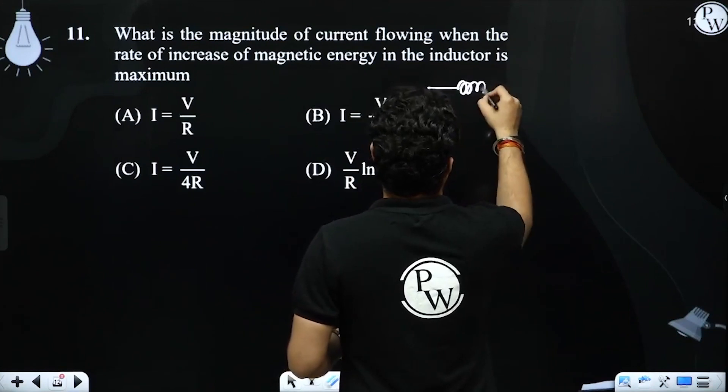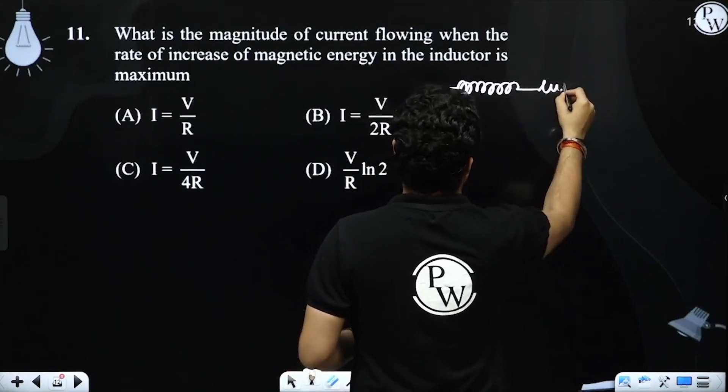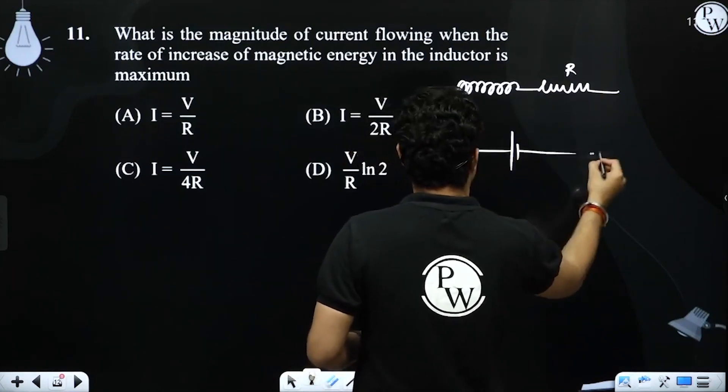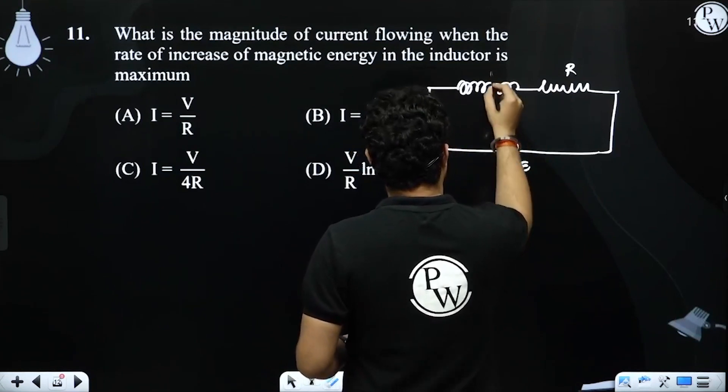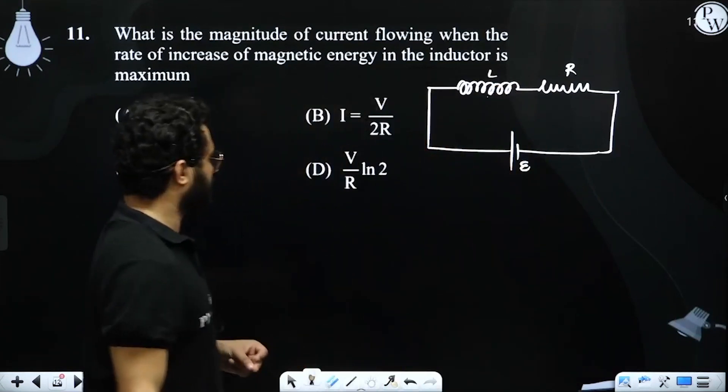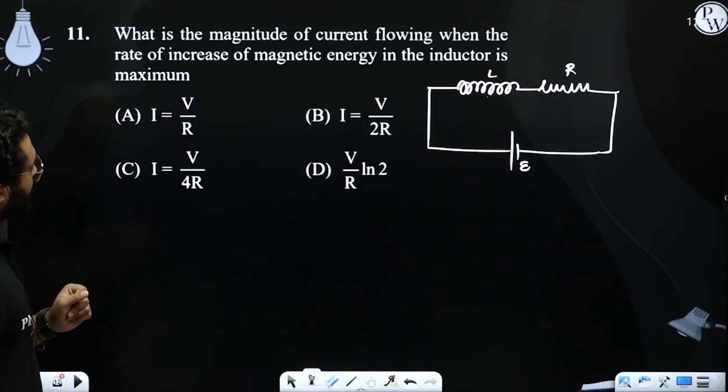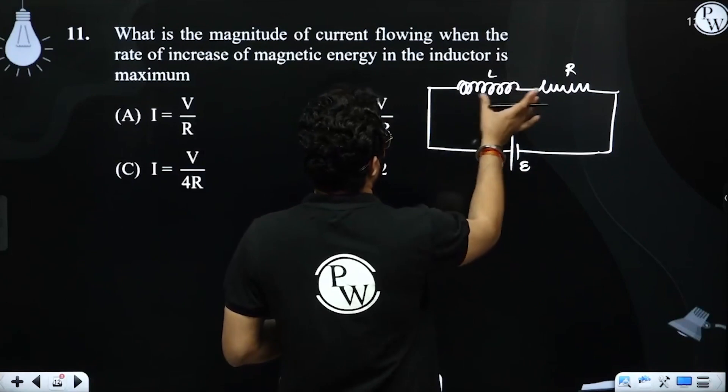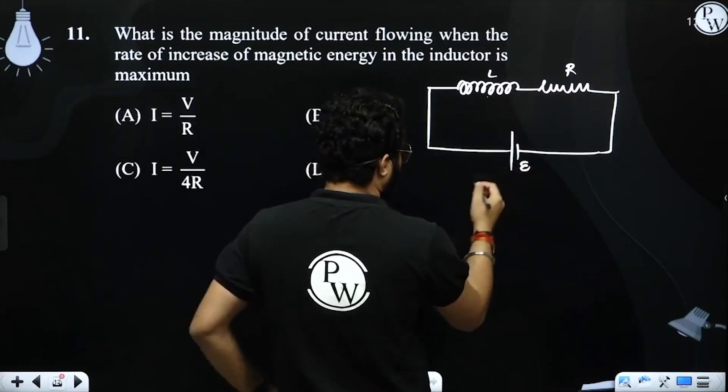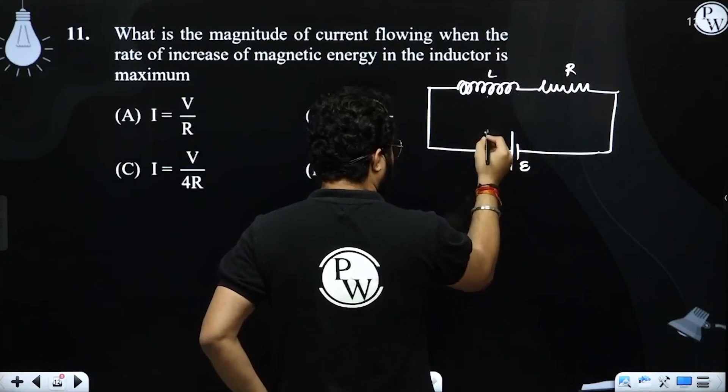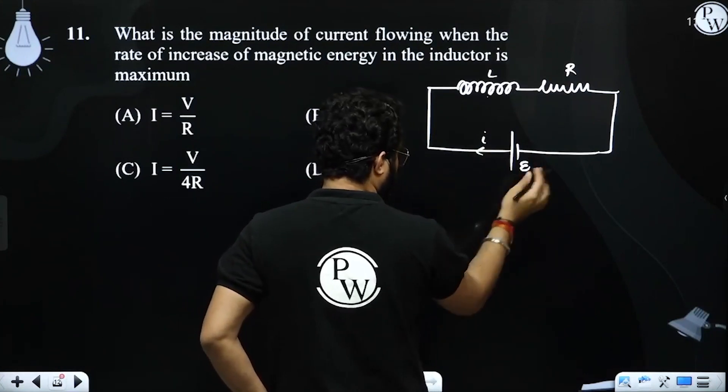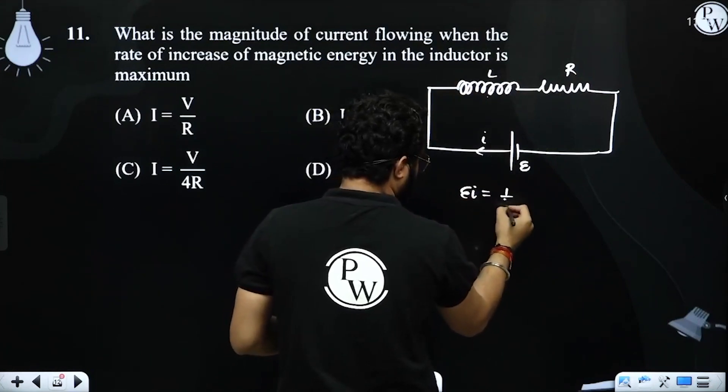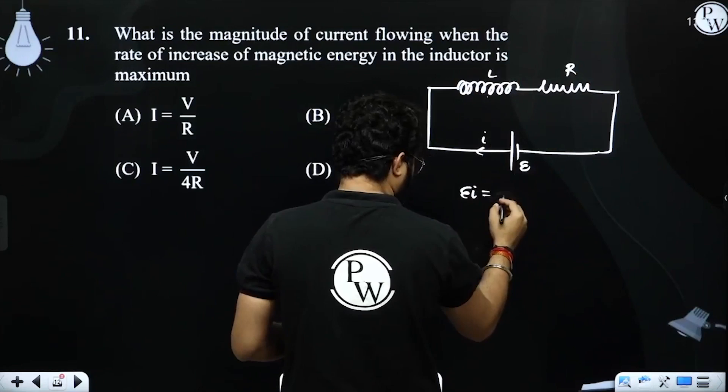So this is the inductor, resistor circuit. The rate of increase of energy means that power is the only thing. So what is the value? Now the rate of increase... What is the value of the power, dP by dt?